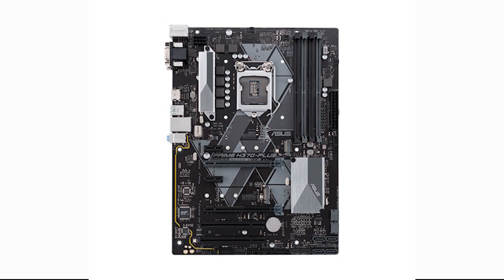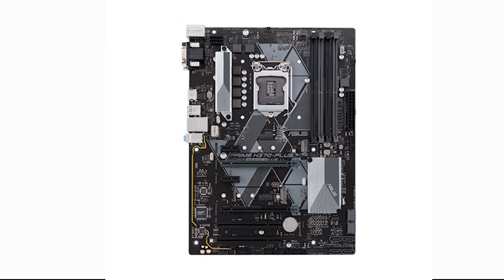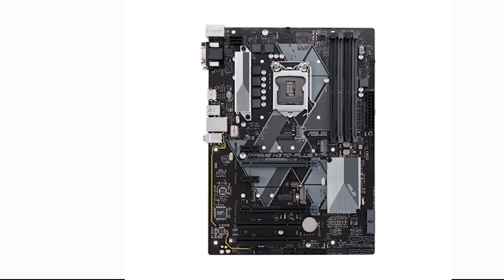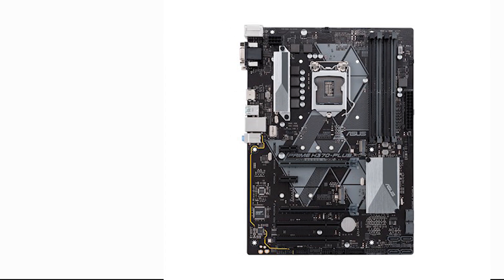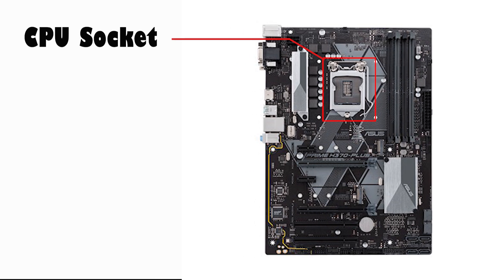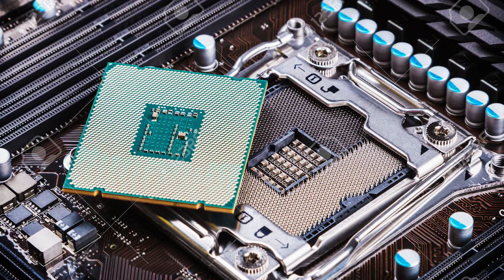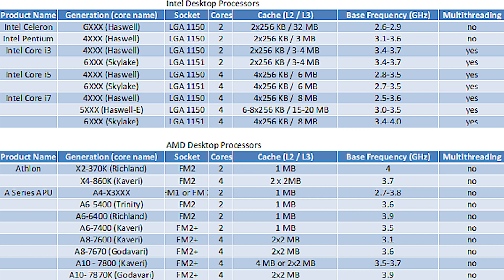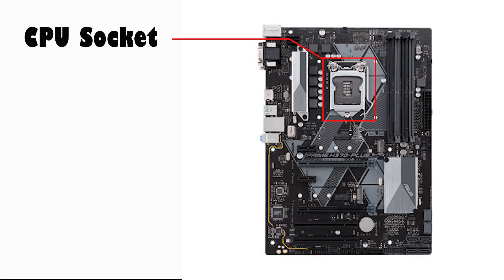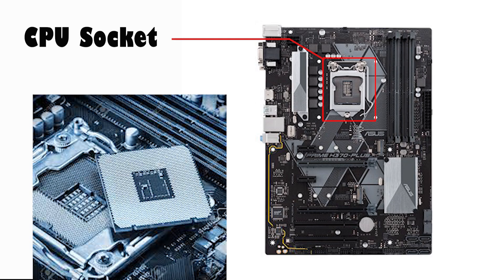At first glance, the components of a motherboard can appear complicated. We will look at the basic components of the motherboard for beginners. The CPU socket is the connector on the motherboard that houses the CPU and forms the electrical interface and contact with it. Your motherboard socket type dictates which type of CPU you can use, so the socket and CPU should be paired together.